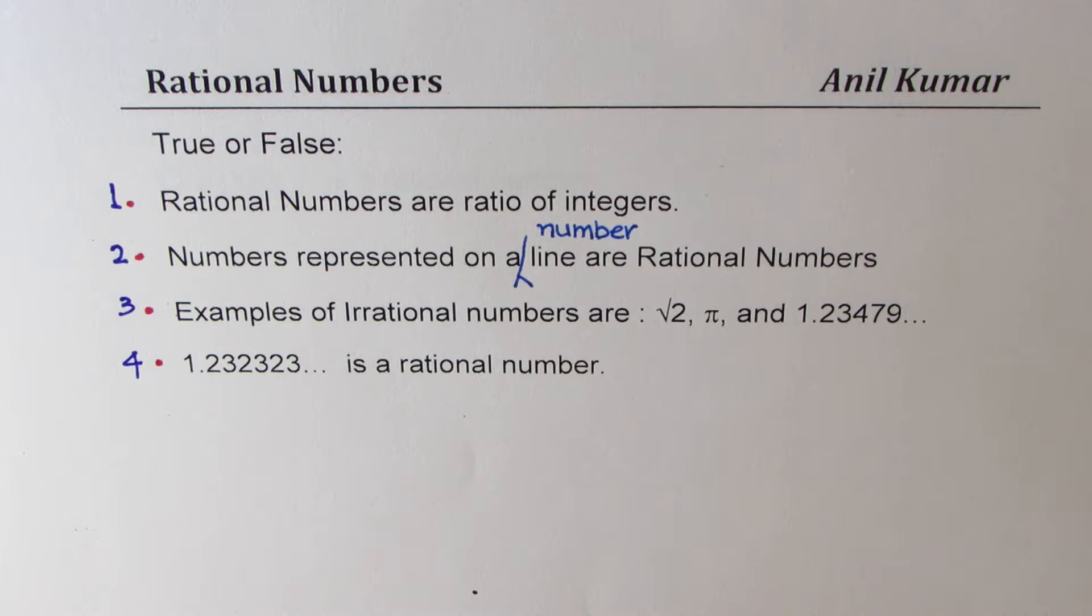Question 2: Numbers represented on a number line are rational numbers. Question 3: Examples of irrational numbers, that means numbers which are not rational. Examples of irrational numbers are square root 2, pi, and 1.23479 and so on.